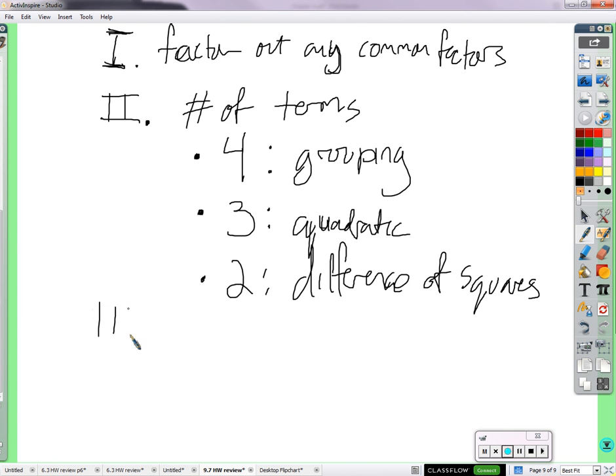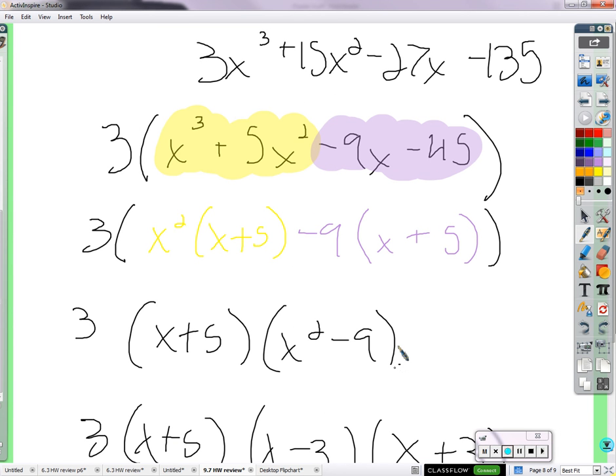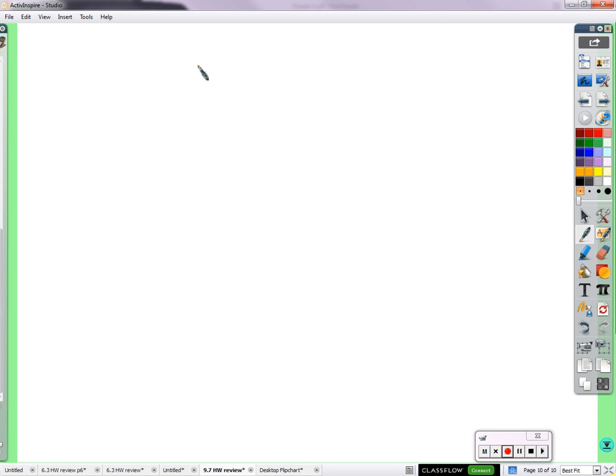And then part three is just, you know, just make sure that there's nothing left to do. Just double check. Double check for further factoring. So what we just did is a good example of one where you would need to factor something out that they're common, factor by grouping, and then double check for more factoring because after we factor out the three and then factored by grouping, we wound up with a difference of squares that we can factor further. So that's usually the catch. If you're going to factor some more, it's usually because one of them has a difference of squares.